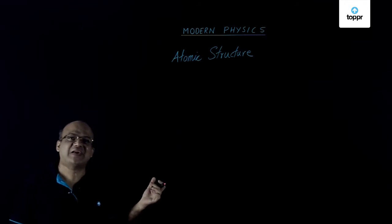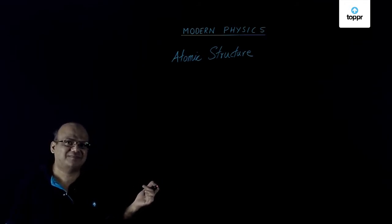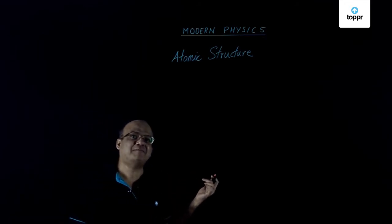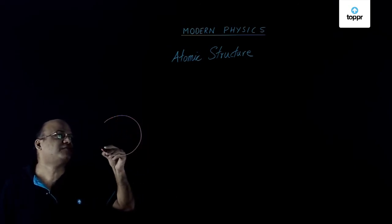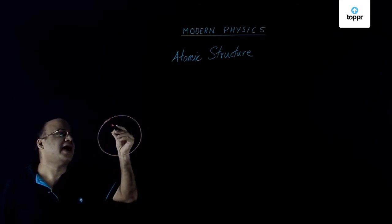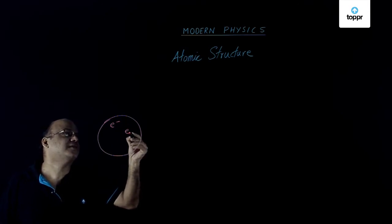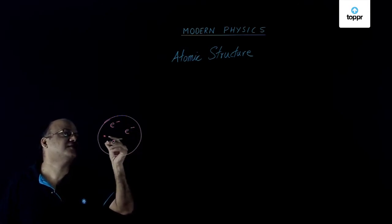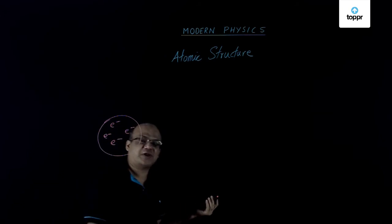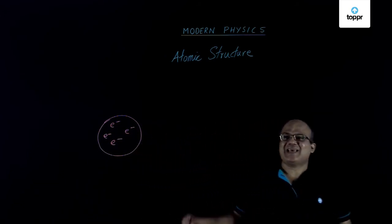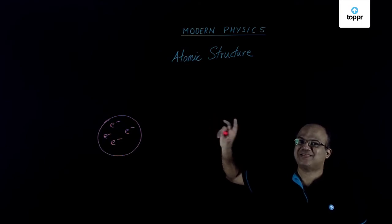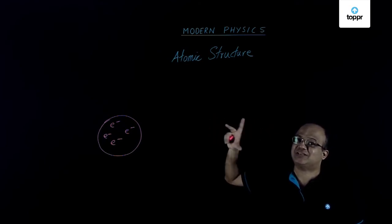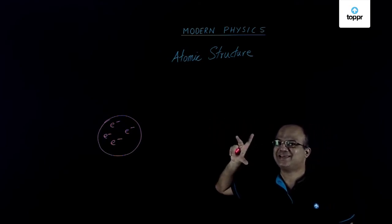Next year he gave a model of the atom that is called Plum-Pudding model. He said there is a positively charged sphere and electrons are embedded in this sphere like plums in a pudding. And this was the model of atom given by Sir J.J. Thompson in 1898.